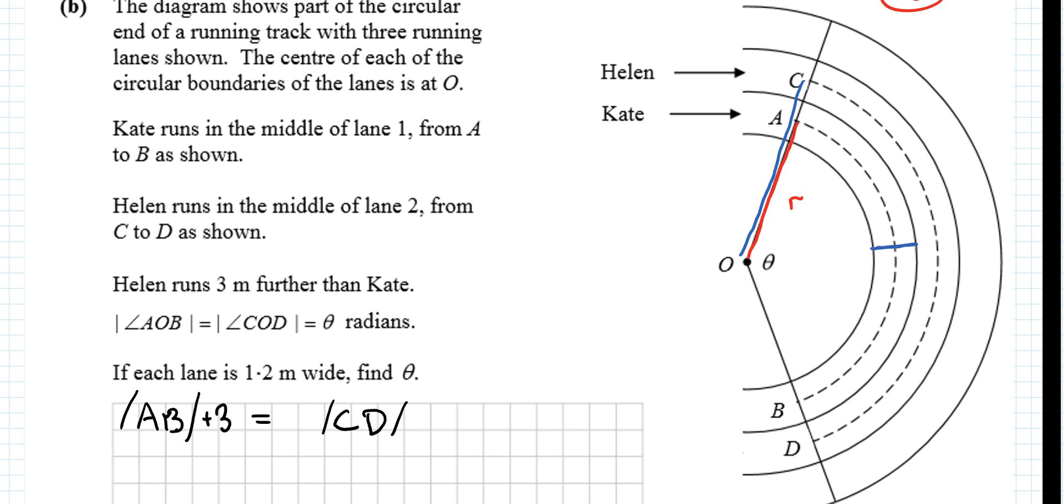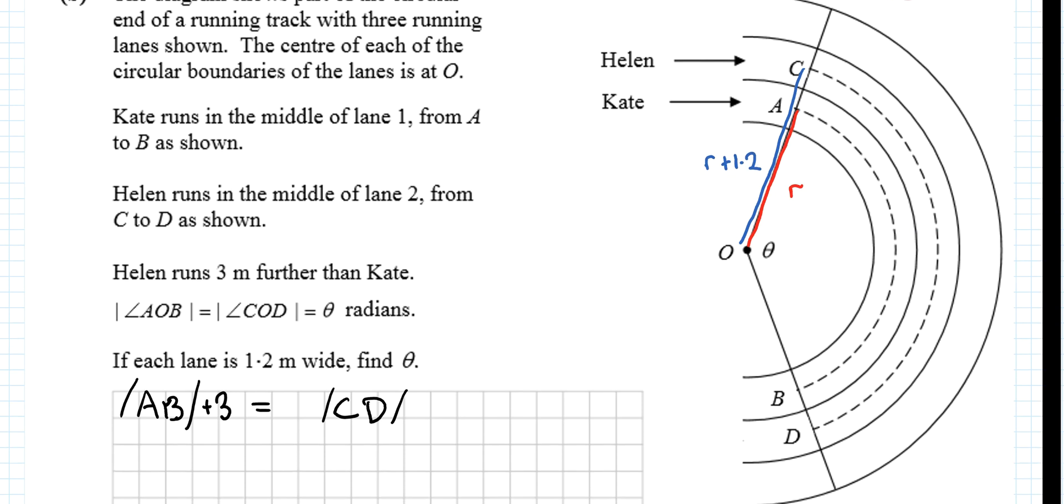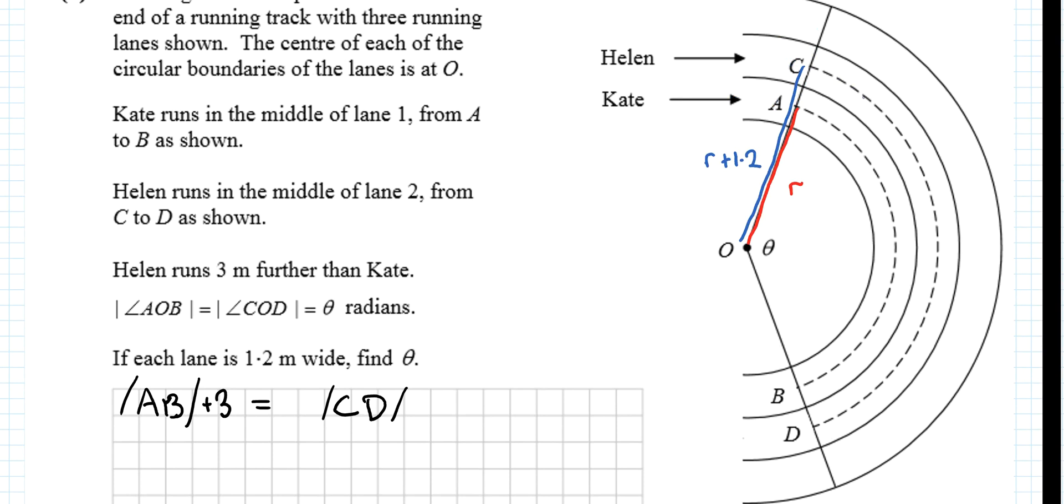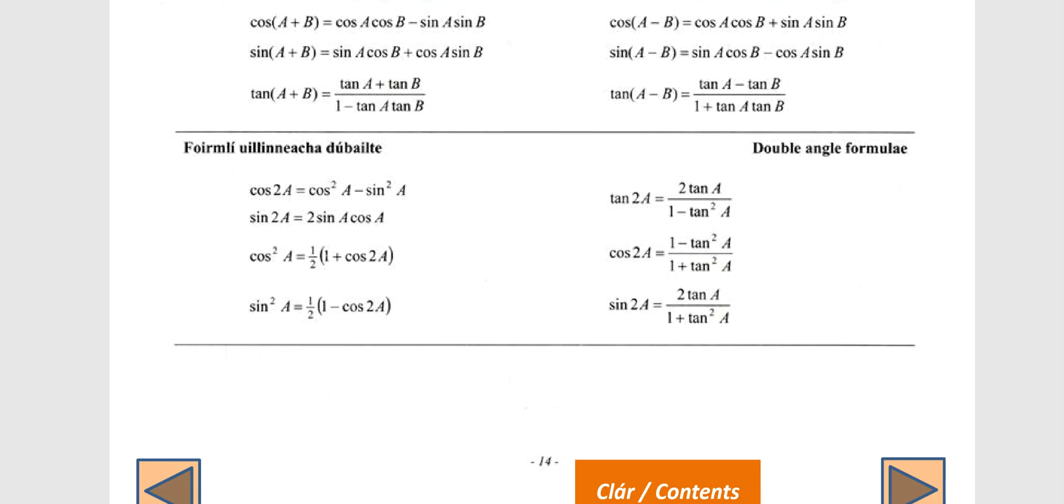So this distance is 1.2. But that distance is also the same as the distance between the two dotted lines. There, that's also 1.2 metres. So the blue bit here is OR plus 1.2. So now we need to look at the arc.